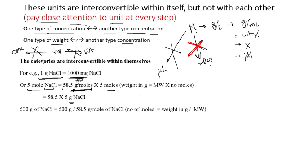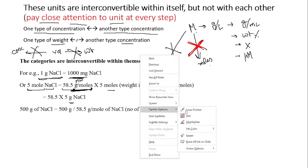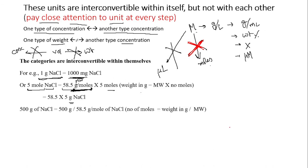If you multiply moles of sodium chloride by its molecular weight, the mole units cancel out and you are left with grams. So you are converting moles to grams. Similarly, if you want to convert grams into moles, divide by molecular weight — the gram units cancel and moles appear in the numerator.